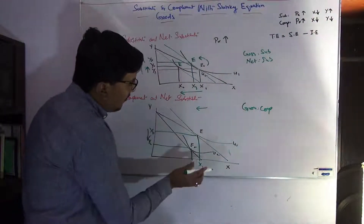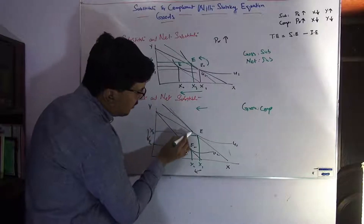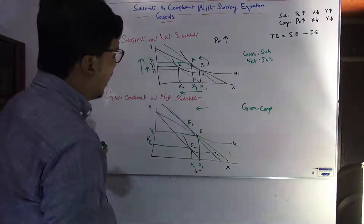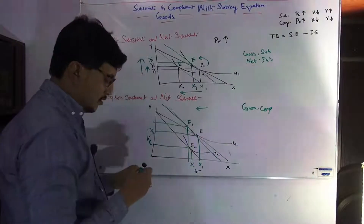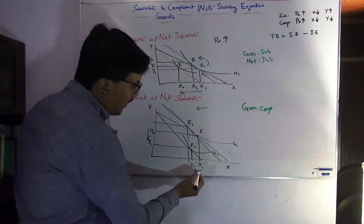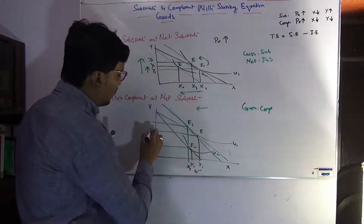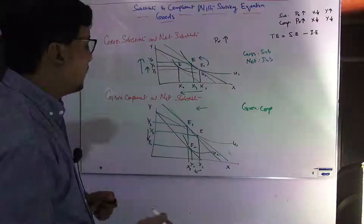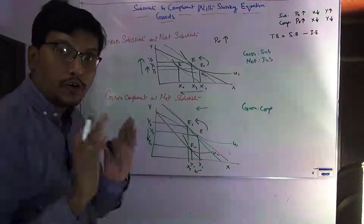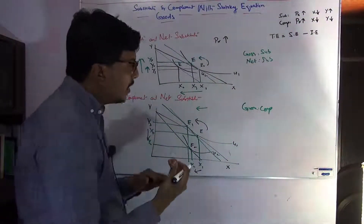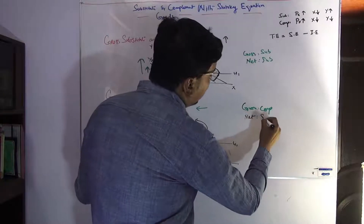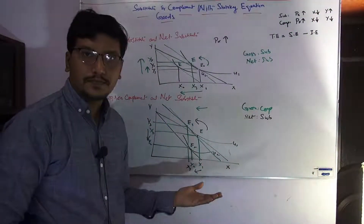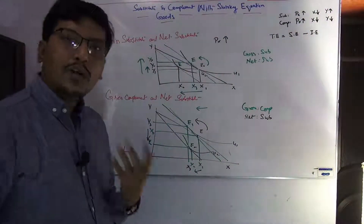Later on the income effect is applied and the compensation is provided, and the new equilibrium E1 is achieved. We observe that good X decreases further but Y increases from the initial point Y1 to Y3. That is why this case is called gross complement, net substitute.